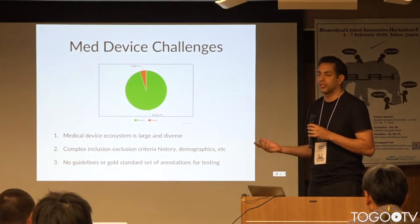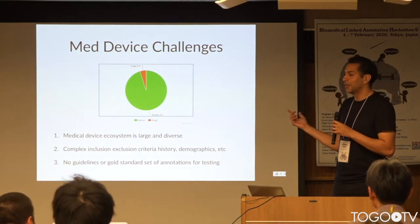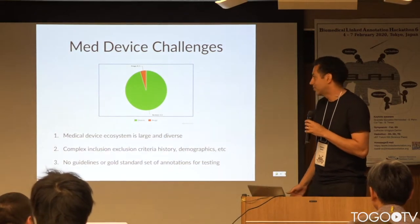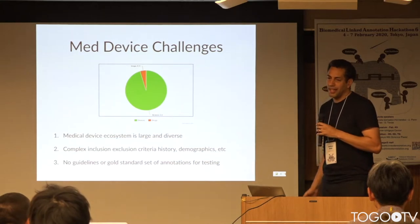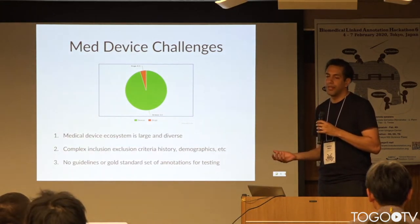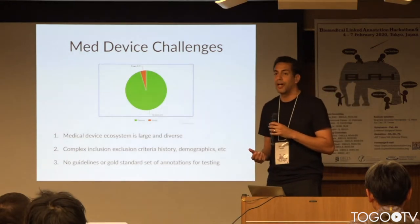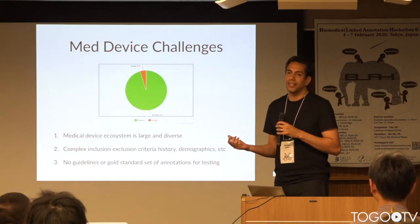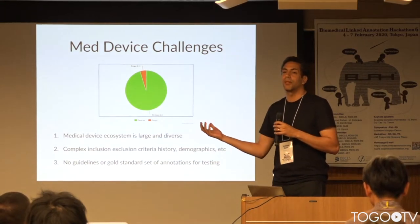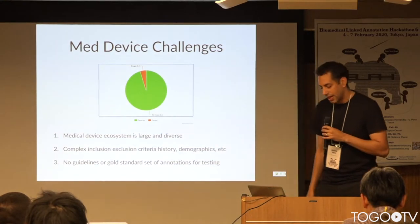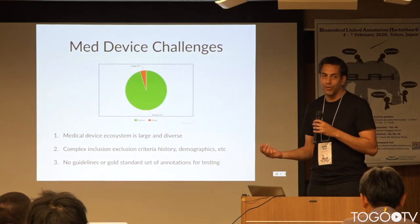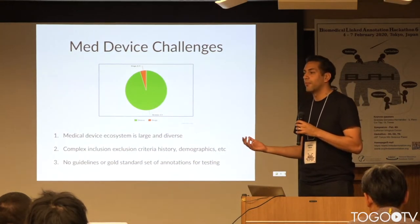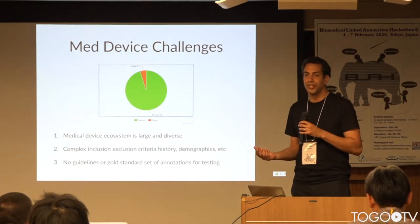There are a few challenges that can make annotation difficult. First, the medical devices ecosystem is very large and complex — this pie chart shows about an order of magnitude more medical device products on market than drug products. Second, indications for medical devices can involve very complex inclusion/exclusion criteria: complex medical histories, demographic variables, oddly specific indications — or on the complete opposite end, very non-specific ones. Finally, even if you had something that worked, there is currently no gold standard set of annotations for medical device indications and, as far as I know, no annotation guidelines.